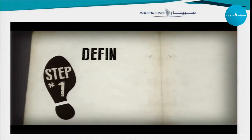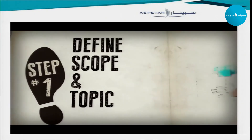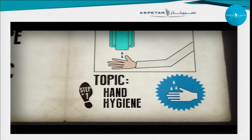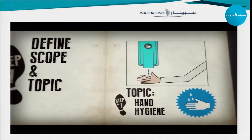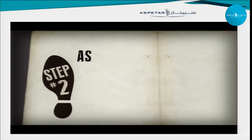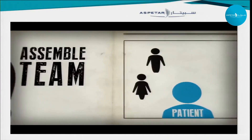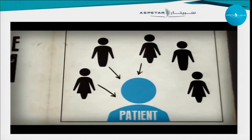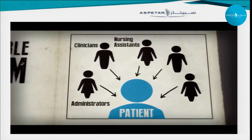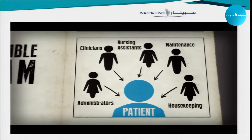Step one is to define the scope and topic of the FMEA — for example, proper hand hygiene and placement of hand sanitizer stations at the point of care to help prevent infection. Step two is to assemble a small, multidisciplinary team of experts who all have contact with patients. This team may include administrators, clinicians, nursing assistants, maintenance, housekeeping, and so on.